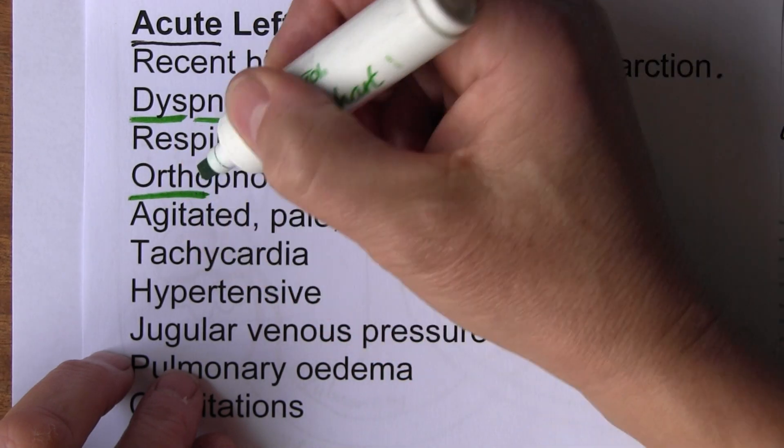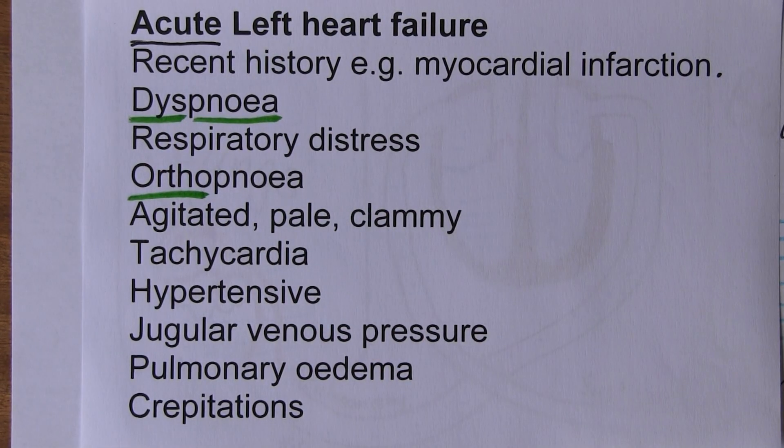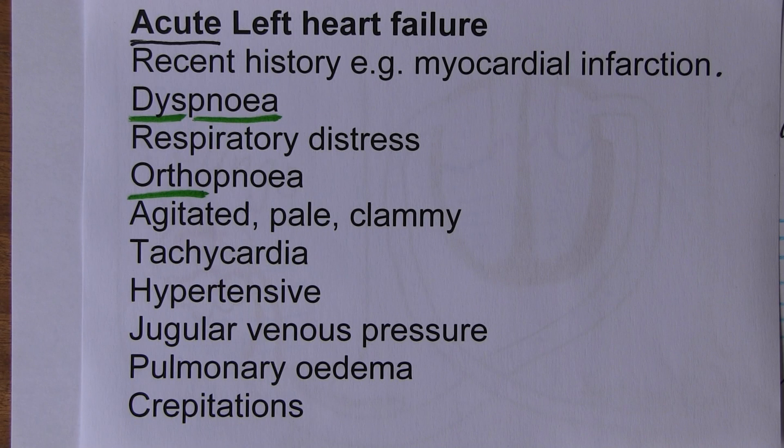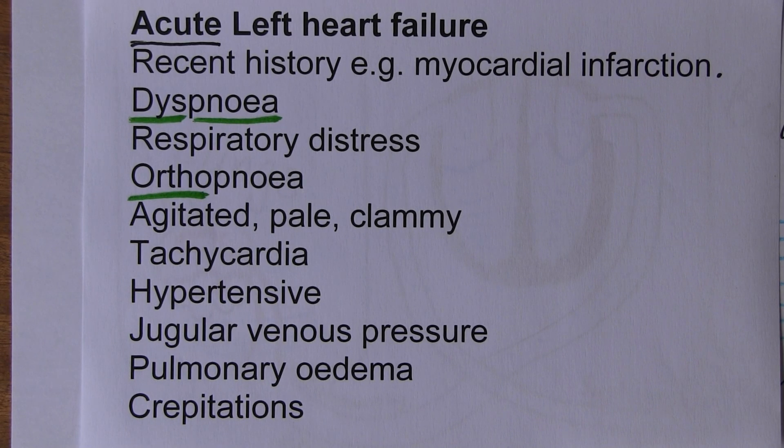Ortho actually means straight. Orthopedics originally meant straight children, straightening children's bones. We see the pnea part again, the breathing part. Orthopnea is difficulty breathing lying down.